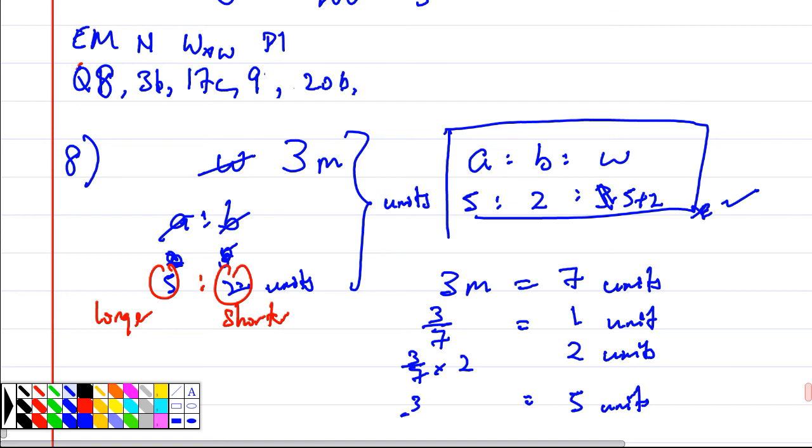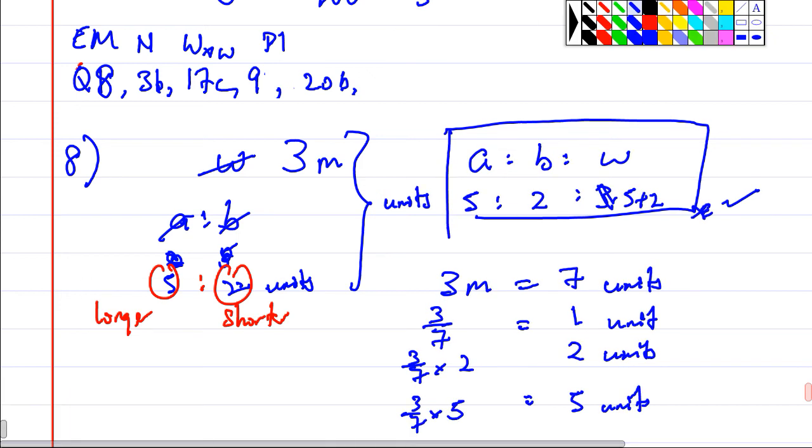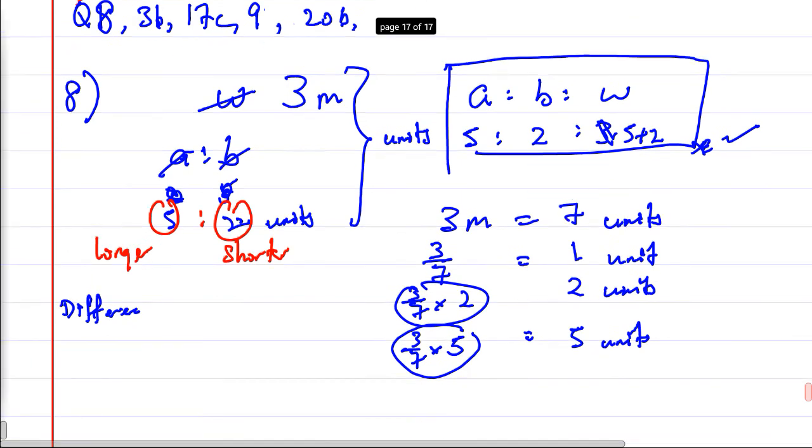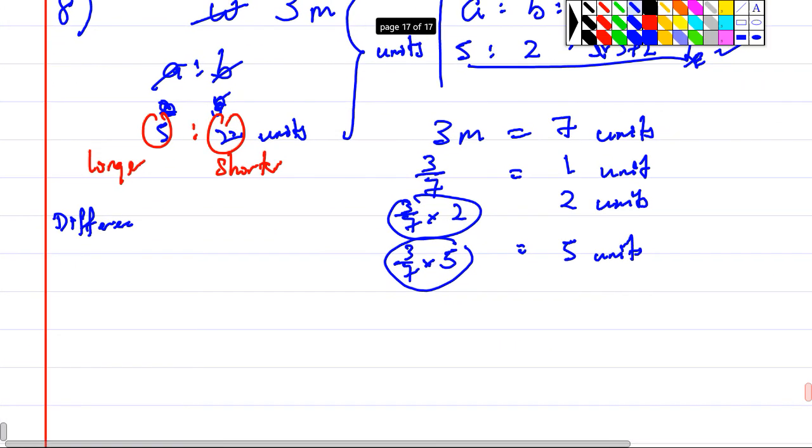3/7 times 5. Lastly, what do I do? Difference is... I take this first number minus the second number, right? So I write, the difference now becomes 3/7 times 5 minus 3/7 times 2. This is the answer.